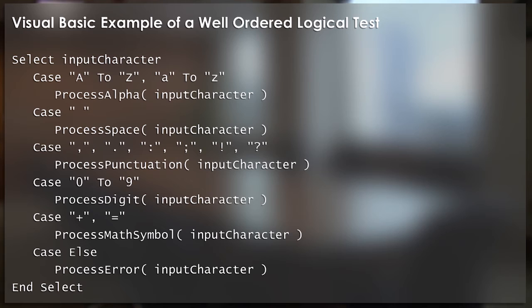And so if we reorder the test, in this particular case, we're processing a stream of input characters that consists mostly of alpha characters, secondly of spaces, thirdly of punctuation characters, fourthly of digits, and finally math symbols. So if we reorder the cases so that the most frequently encountered cases are at the top, the least frequently encountered cases are at the bottom, then in theory that should give us improved performance. So how does that actually play out?